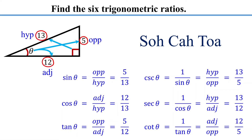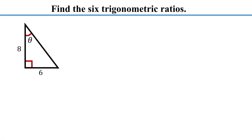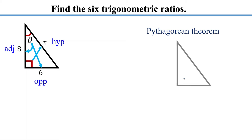In this example, we were given the lengths of all three sides, but what if we only know the lengths of two sides? As before, the first step is to label the sides with respect to theta. Opposite the right angle is the hypotenuse; opposite theta is the opposite side; the remaining side is the adjacent side. The next step is to find the length of the missing side — let's call it x. According to the Pythagorean theorem, the square of the hypotenuse equals the sum of the squares of the other two sides.